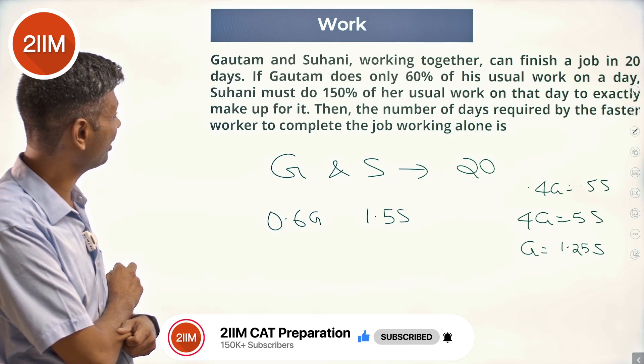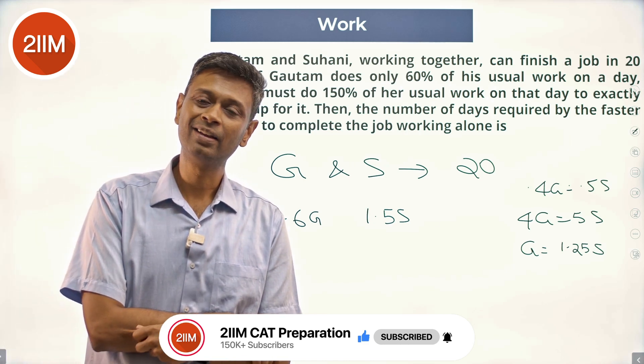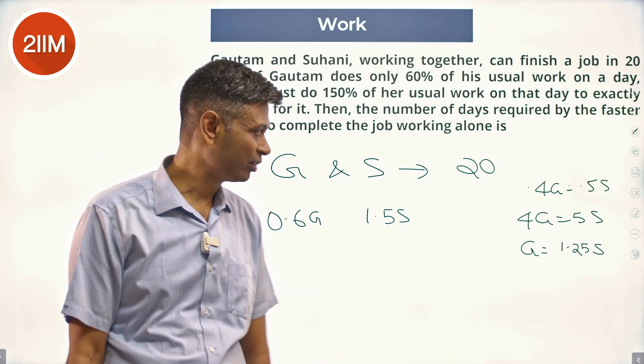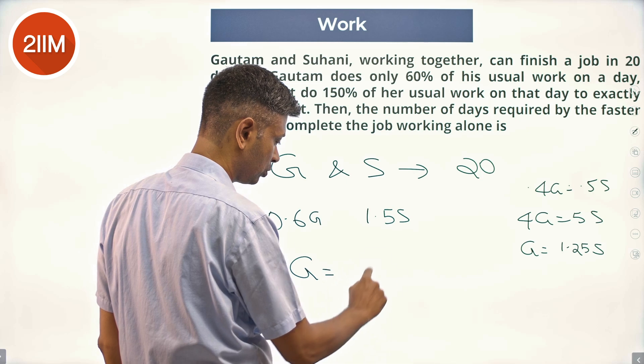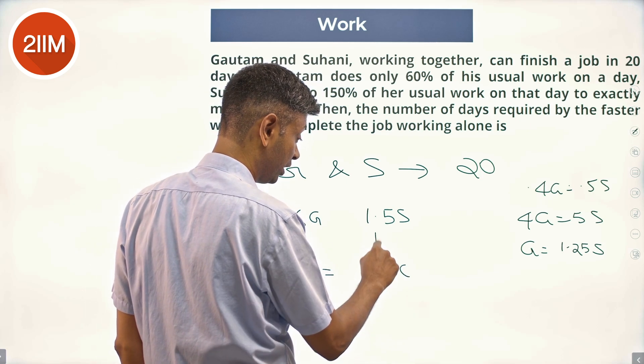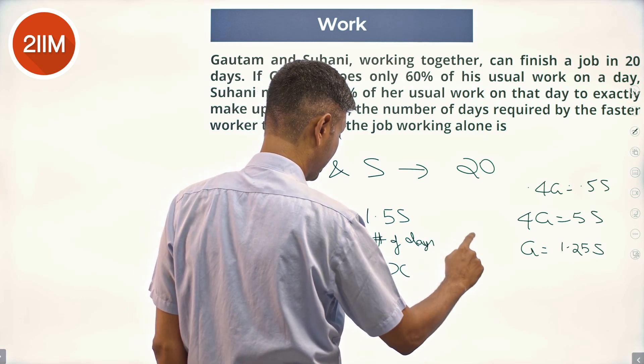The number of days required by the faster worker to complete the job working alone: G is 1.25S, so the number of days taken by G is 4x, and the number of days taken by S